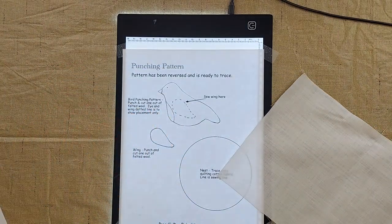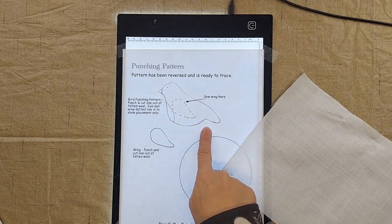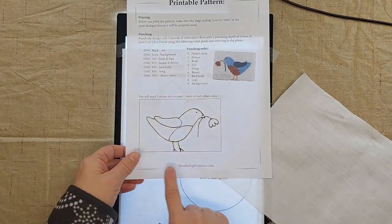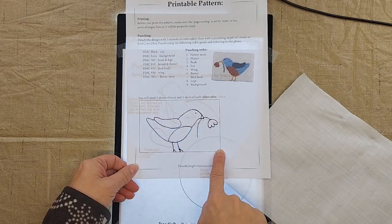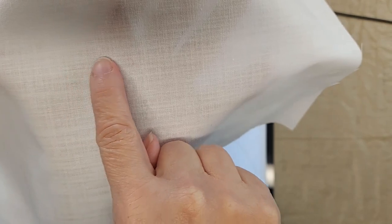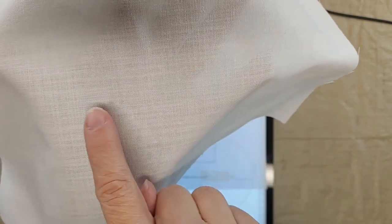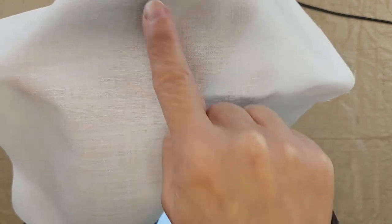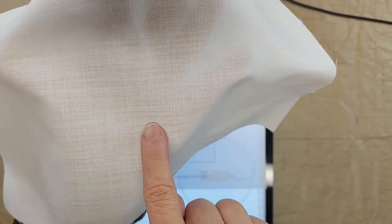Now this particular pattern doesn't have lines around it because it's a three-dimensional project. This one here, notice how it has a rectangle drawn around the pattern that will all be punched. You can see that this weaver's cloth is a woven fabric. It has little threads going this way and little threads going perpendicular to it this way.